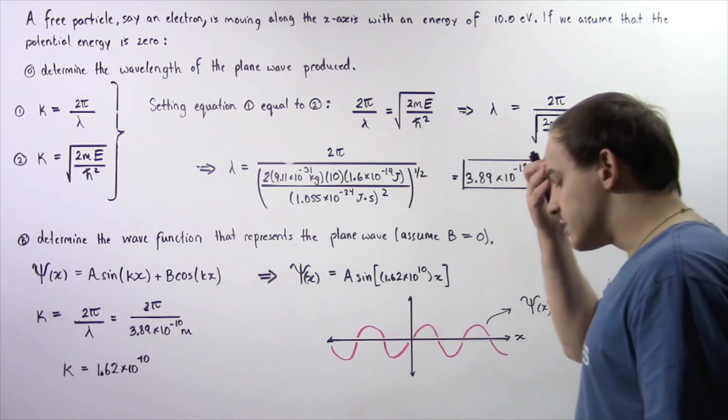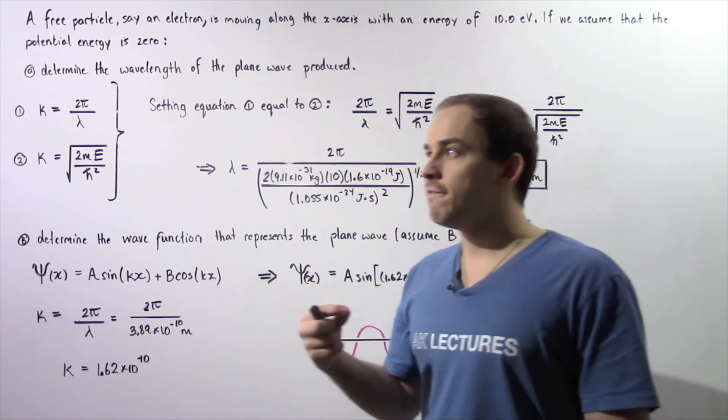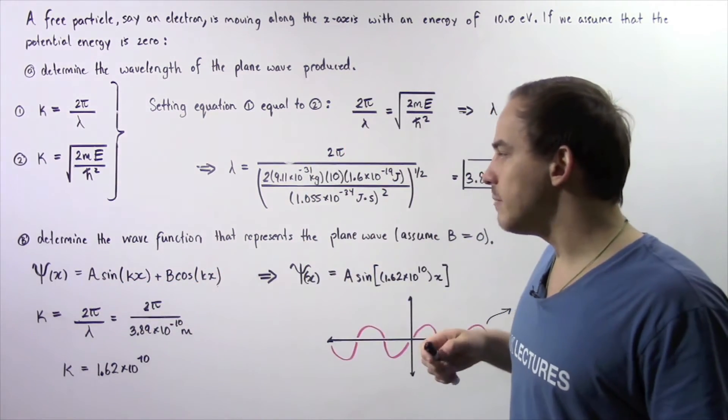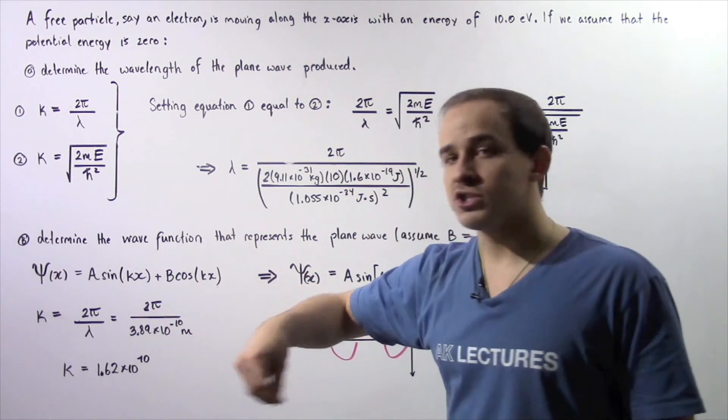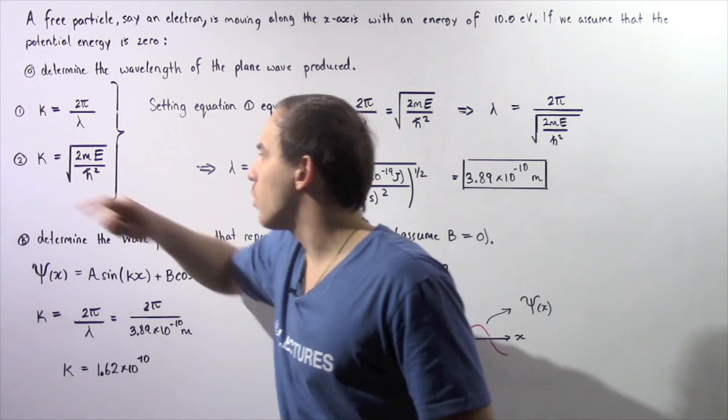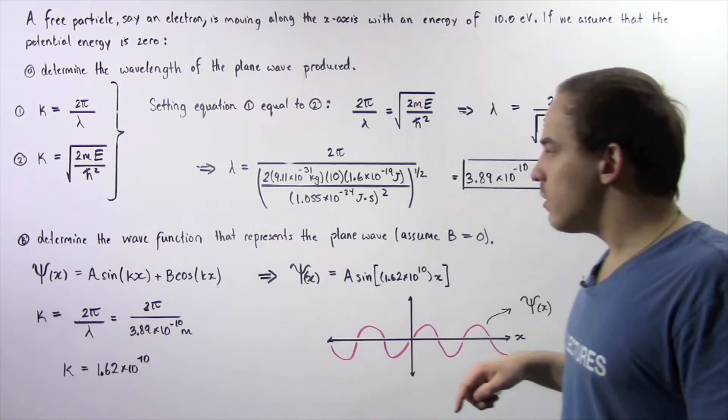In the previous lecture, we said that the equation for the wave function of our plane wave is given by this formula, where A and b are two constants and k is given by equation 1 or equation 2, and x is our variable.